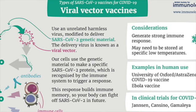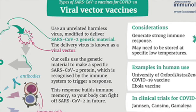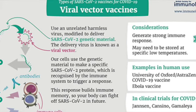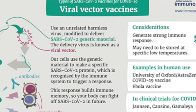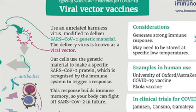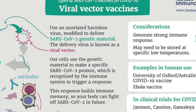Viral vector vaccines are used to protect against COVID-19. Future vaccines include DNA vaccines and recombinant vector vaccines, as well as plant-based vaccines, which act like natural infections and are especially good at teaching the immune system how to fight off germs.